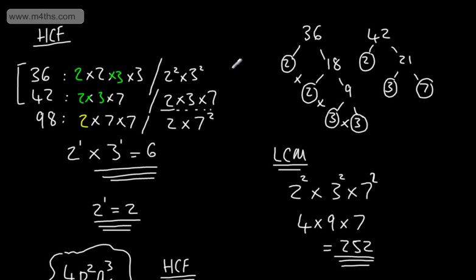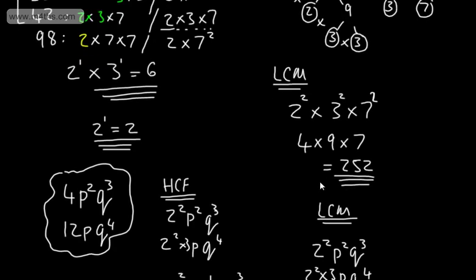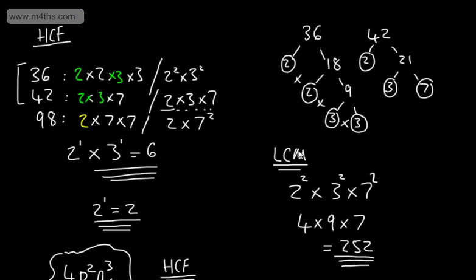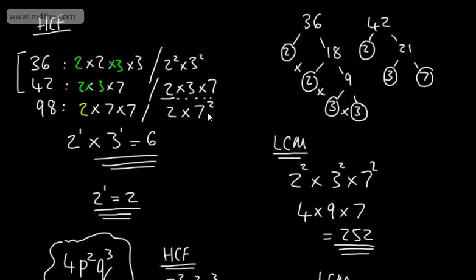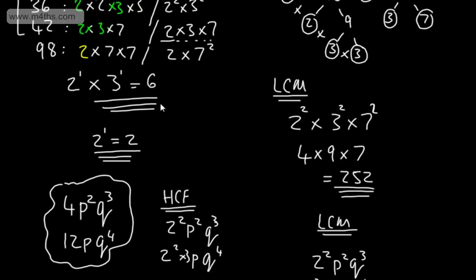To summarize: the highest common factor is the largest number that goes into 2 or more numbers. Using prime factorization, we look at the numbers that appear in both lists, write them out, and take them to the lowest power. For the lowest common multiple, we look at all the numbers that appear across the lists, write them out, and take them to the highest power. For lower-level courses, listing factors and multiples works for small numbers; for larger numbers and algebraic expressions, prime factorization is the better method.